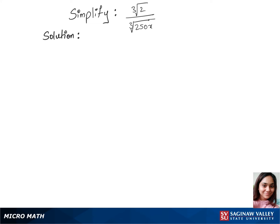Let's simplify this question. We'll first combine the cubic root between numerator and denominator, so that's cubic root of 2 over 250x. We can cancel 2 and 250 with 125. Now we have cubic root of 1 over 125x.